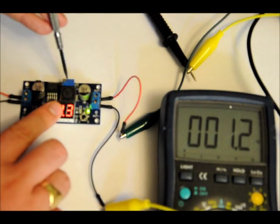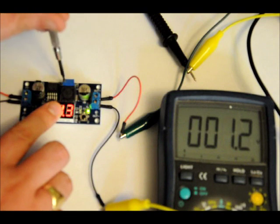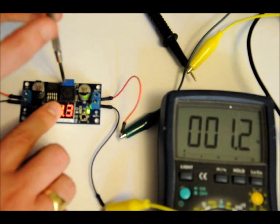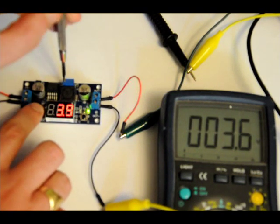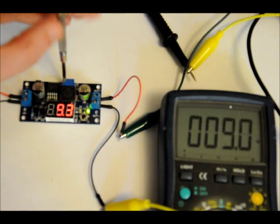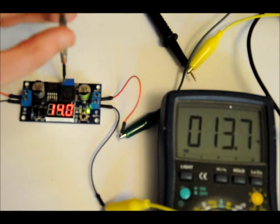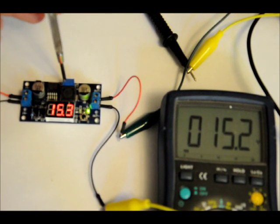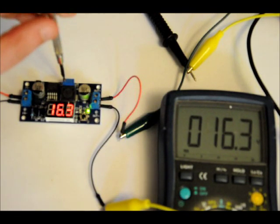Now you can change the voltage of the output by tuning this variable resistor. Let's just stop it around 15 volts. There we go. Pretty neat.